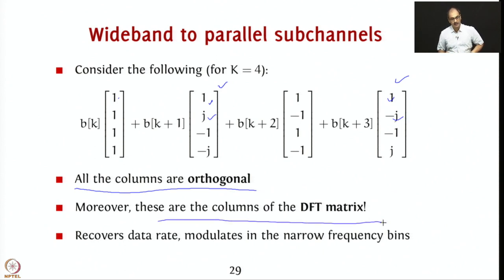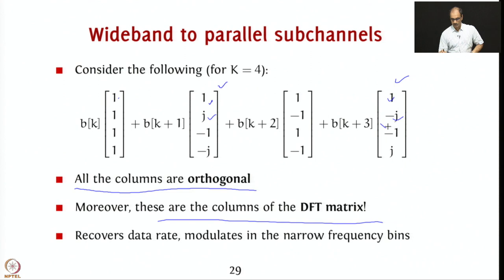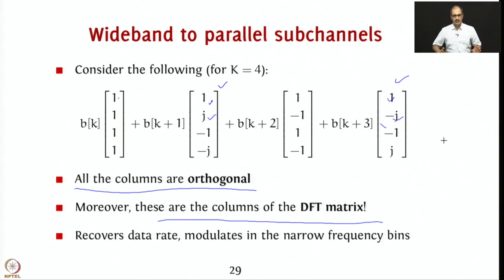Therefore, you are able to parallelize the transmission into several narrowband transmissions merely by using the DFT operation — you don't even have to do the explicit multiplication operation, you just need to use the DFT. When taking inner products with complex vectors, remember to take conjugates, which is why e^(j2π/4) and e^(j6π/4) give +1 when properly computed, ensuring orthogonality.